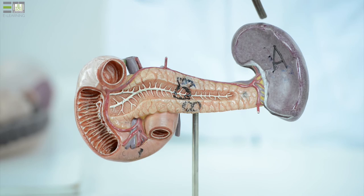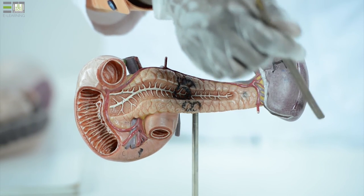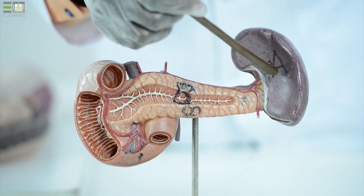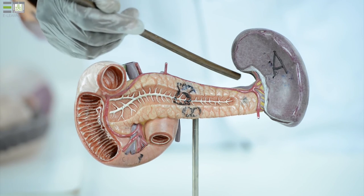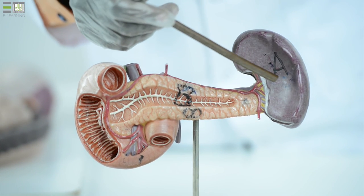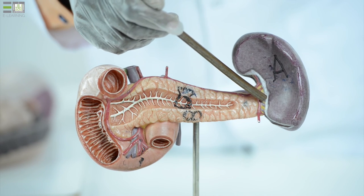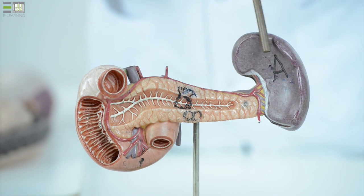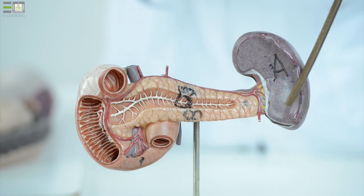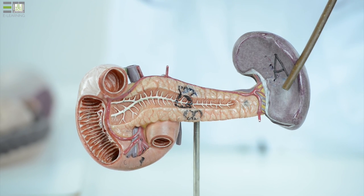The outer surface is related to the ninth and tenth ribs, and the visceral surface is related to the stomach, to the left kidney, related to the left colic flexure, and related to the tail of the pancreas. The upper border is characterized by presence of a notch called the splenic notch.